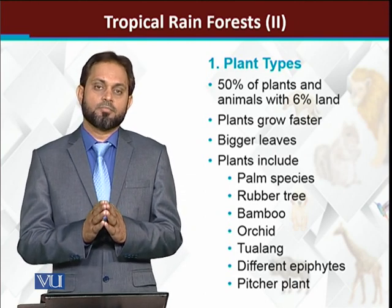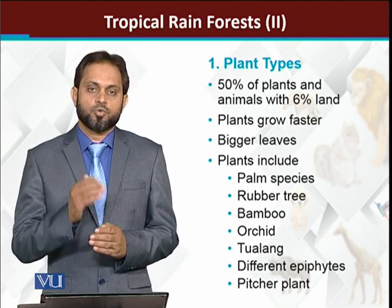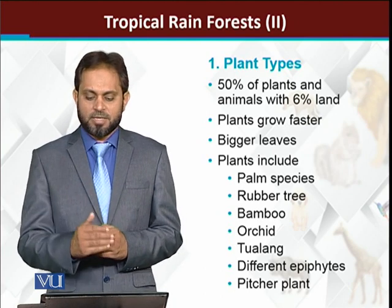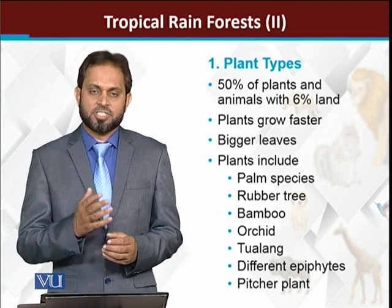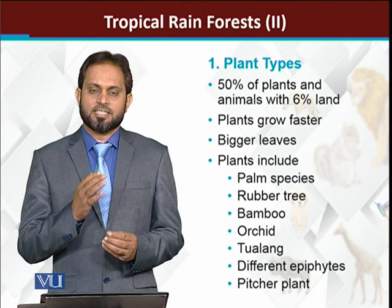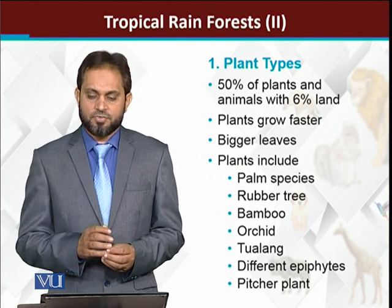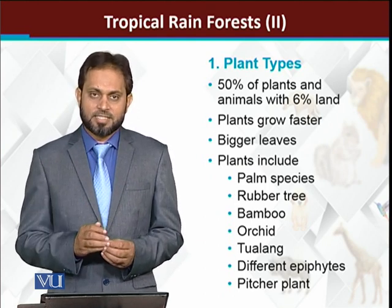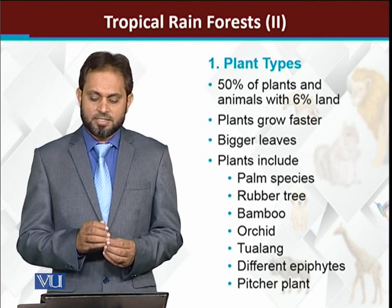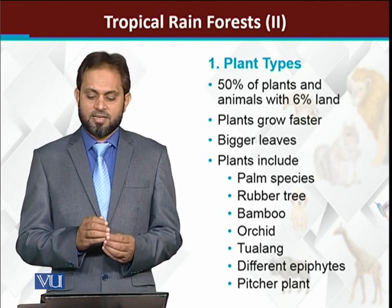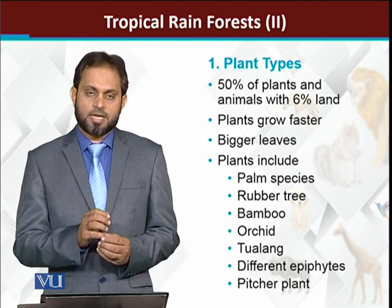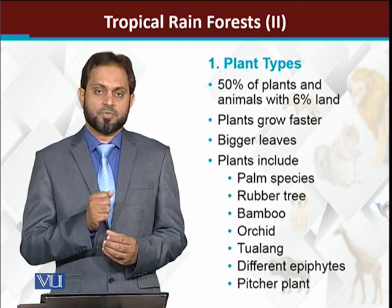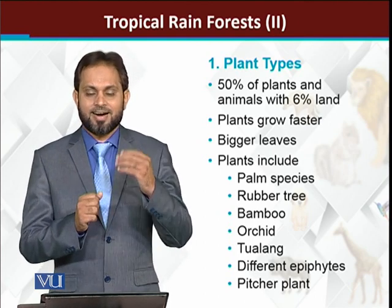There are about two and a half lakh species of plants in tropical rainforests. Important ones include palm trees, different types of palm species, rubber trees, bamboo, orchids, tolung, different types of epiphytes, and pitcher plants — meaning large trees are also reported.